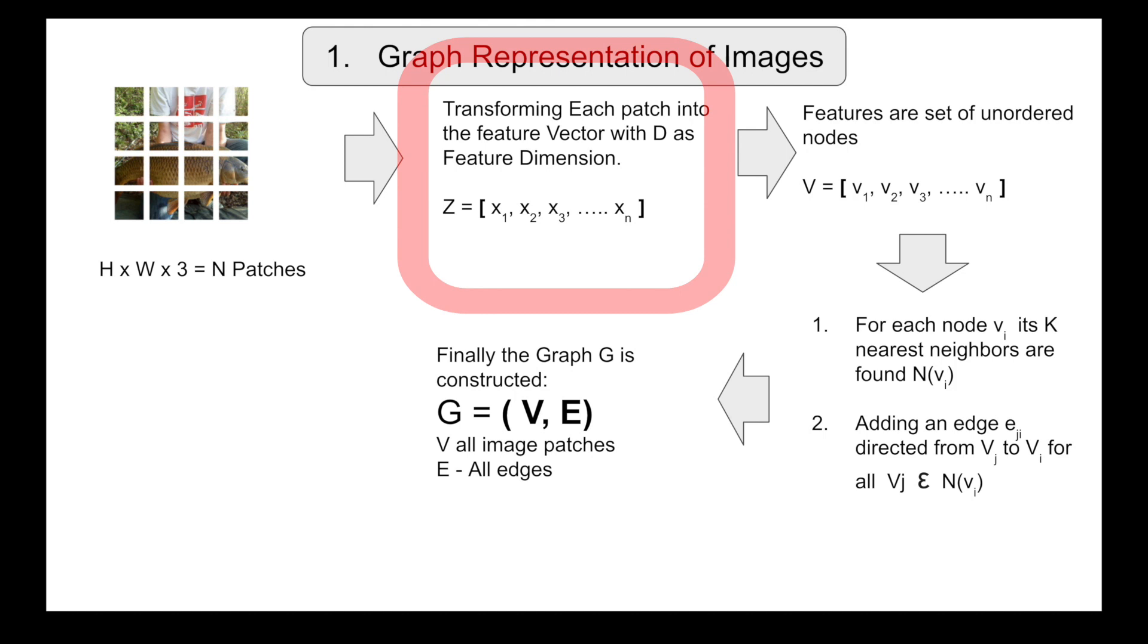So you are going to have N patches and each patch is going to be transformed into a feature vector. And here, feature vector dimension will be D. Some of the images will have more features than others. However, the feature dimension across all those given patches will be considered as D.